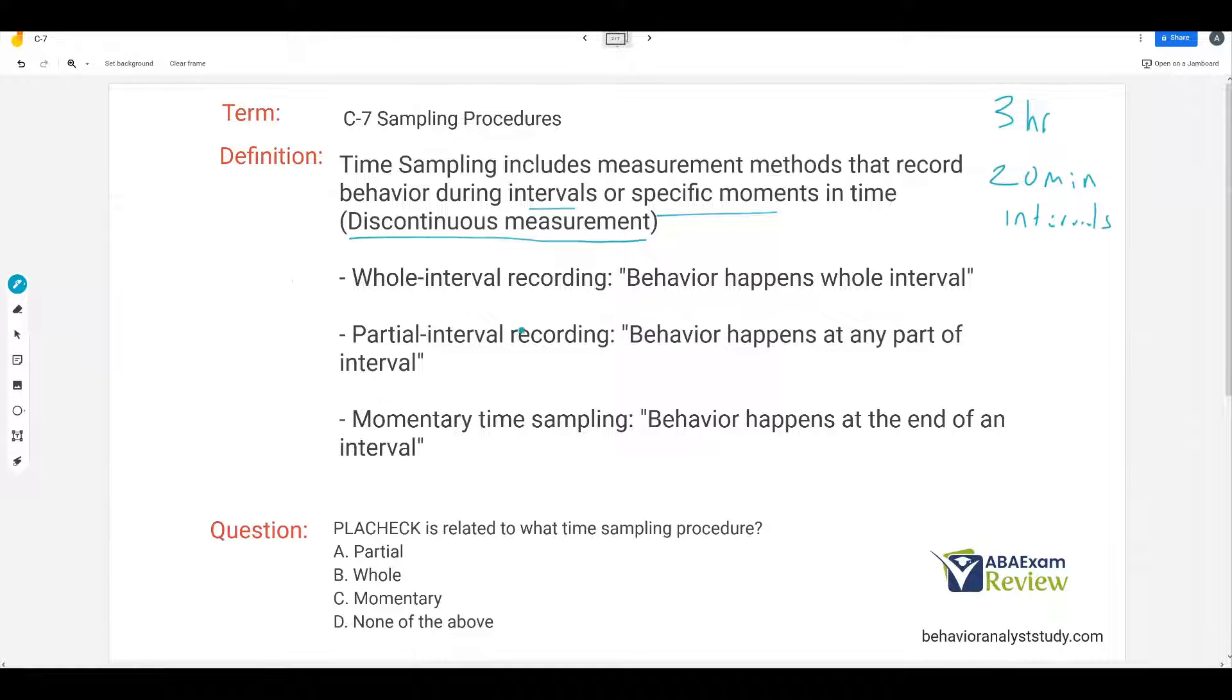We have three types specifically. Playcheck being the fourth, but we're going to specifically talk about whole interval recording, where behavior happens the whole interval; partial interval recording, where behavior happens at any part of the interval; and momentary time sampling, where behavior happens at the end of an interval.